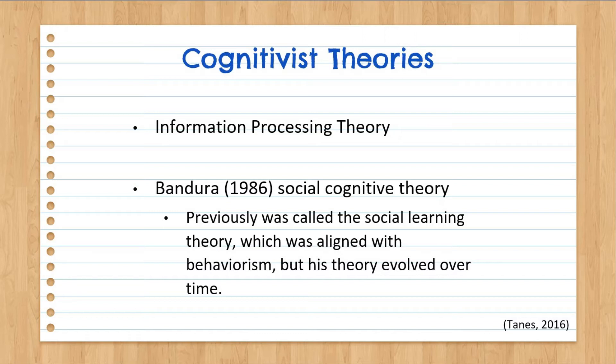Another theory within cognitivism is Bandura's social cognitive theory. You'll notice Bandura is sometimes mentioned under behaviorism and sometimes under cognitivism. This is because his theory was initially called social learning theory with more of a behaviorist focus, but evolved over time to align more with cognitivism. In his original social learning theory, he argued that individuals learn by observing others' behaviors, attitudes, and outcomes of those behaviors.